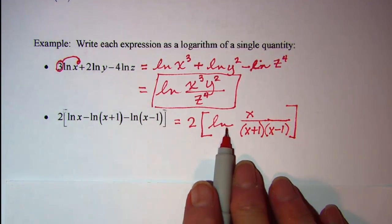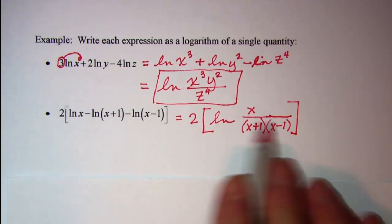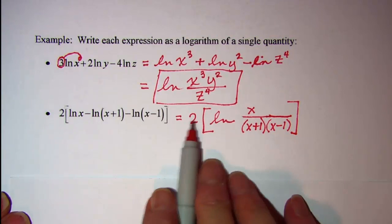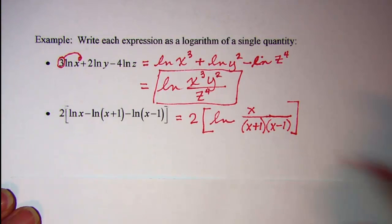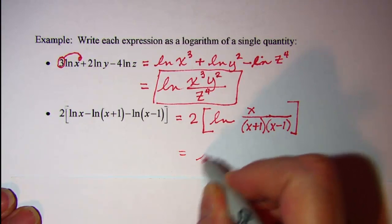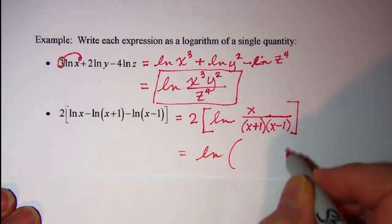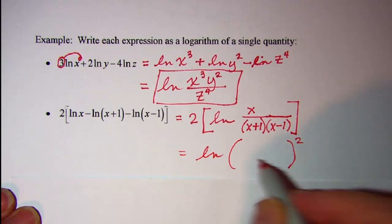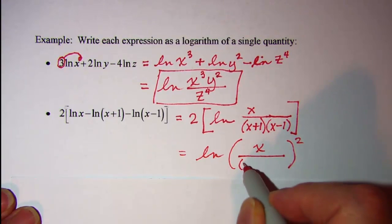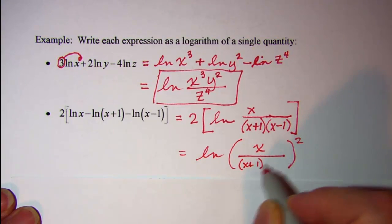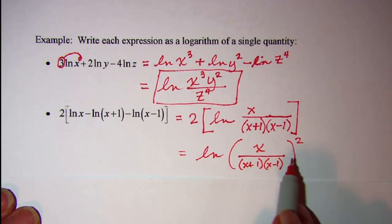Alright, now I have a single logarithm of a single quantity. I can take this 2 and write it as the exponent on my argument using property 4. So this is the same then as ln of x over x plus 1 x minus 1, and that's quantity squared.